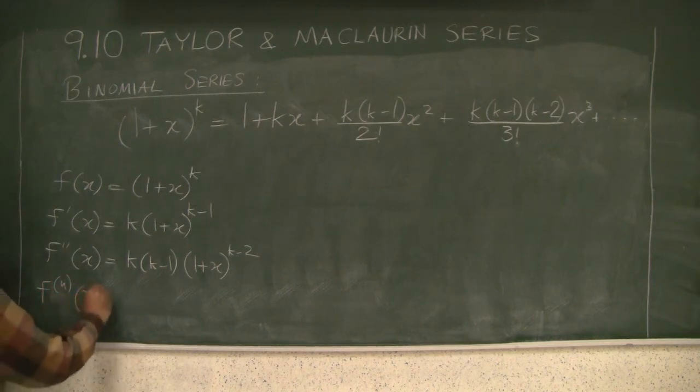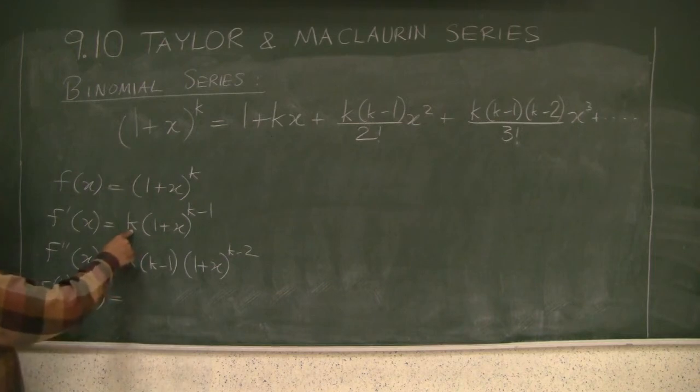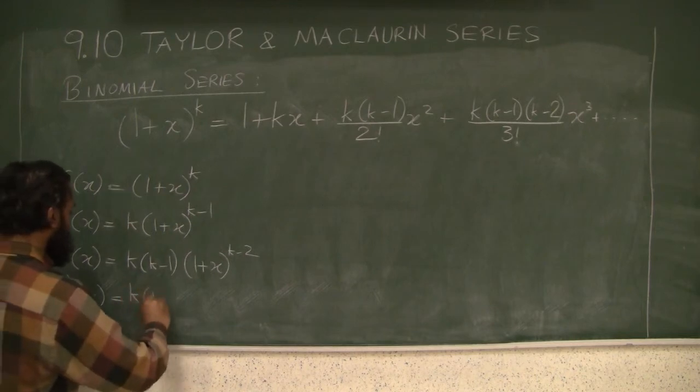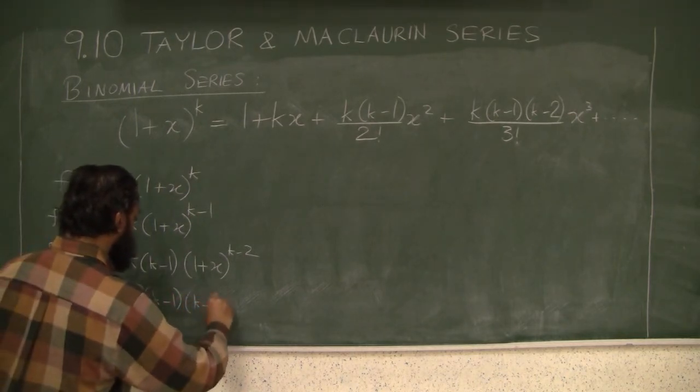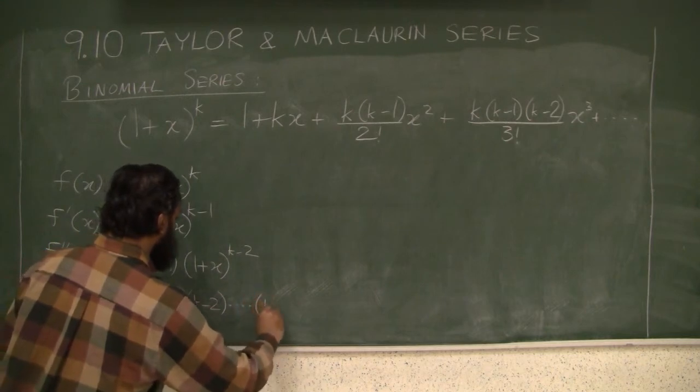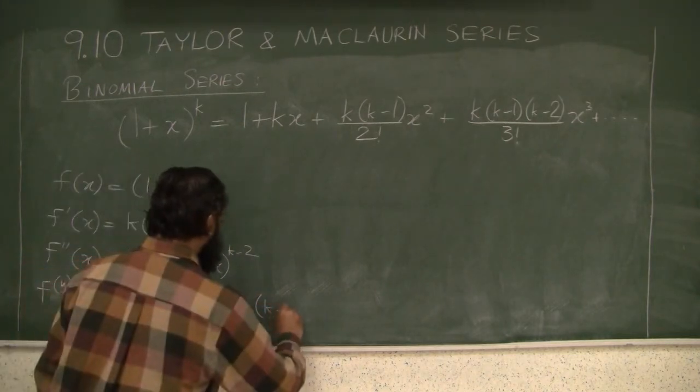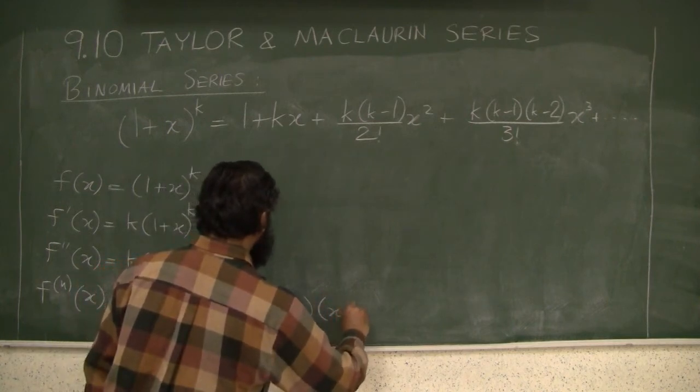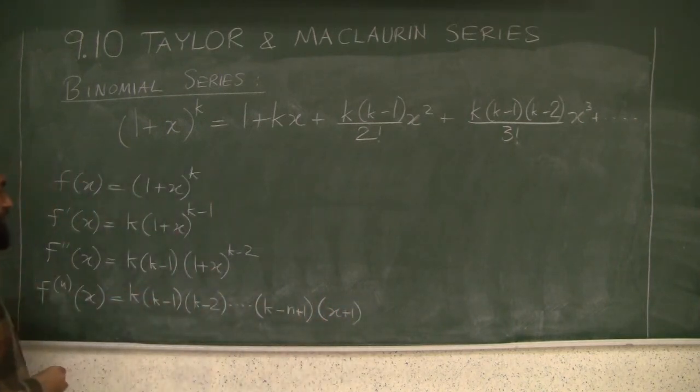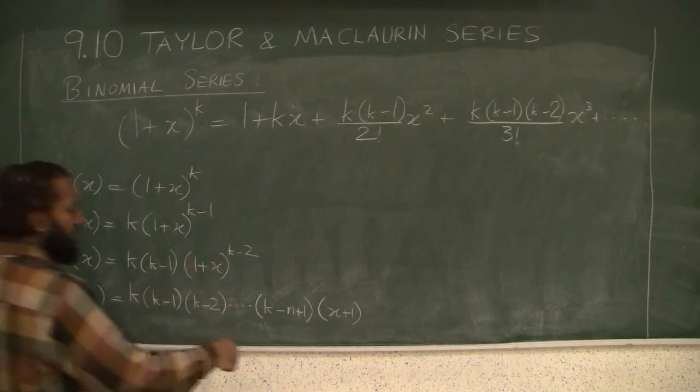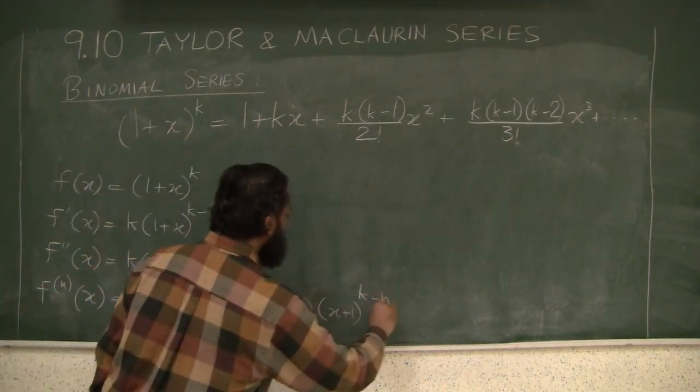The answer will turn out to be: the first derivative is k minus 0, or k. Second derivative stops at 1, so it will be k times (k-1). Third derivative is k times (k-1) times (k-2), and so on, times (k-n+1).